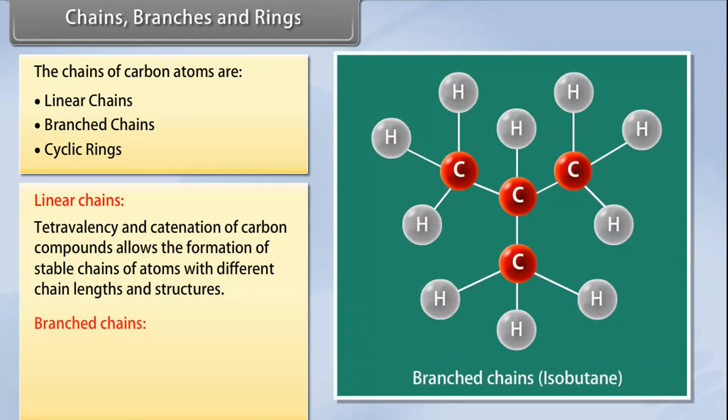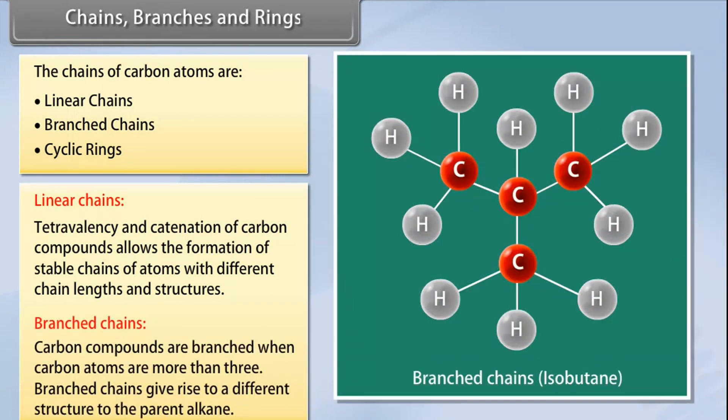Branched chains: Carbon compounds can be branched when the carbon atoms are more than three. Branched chains give rise to a different structure to the parent alkane.